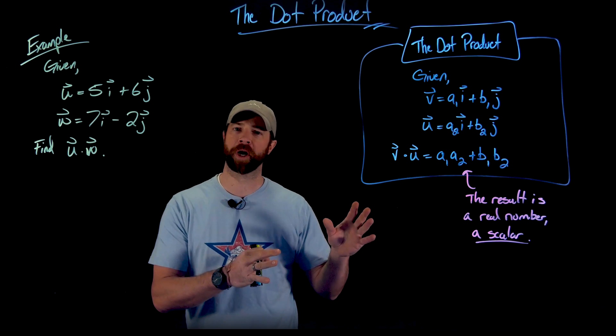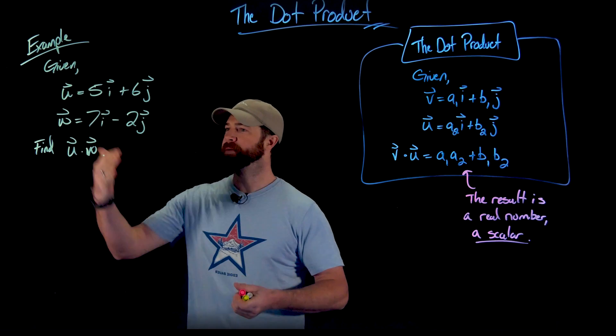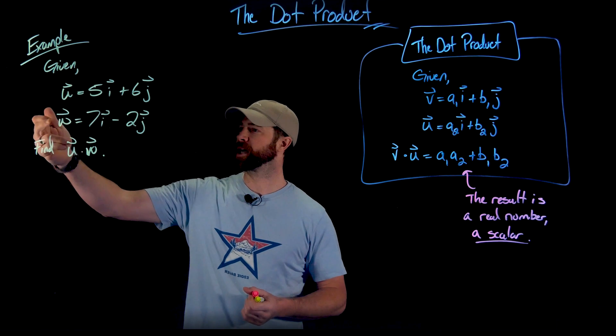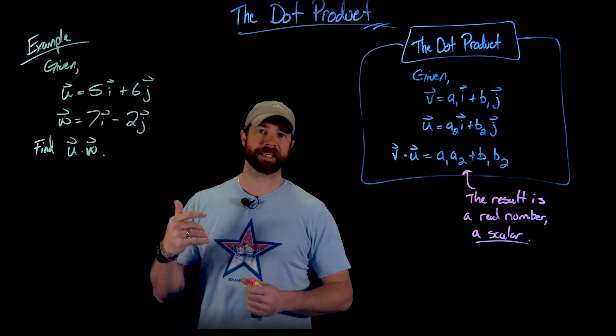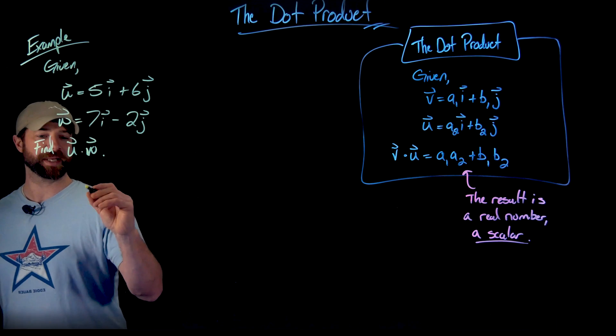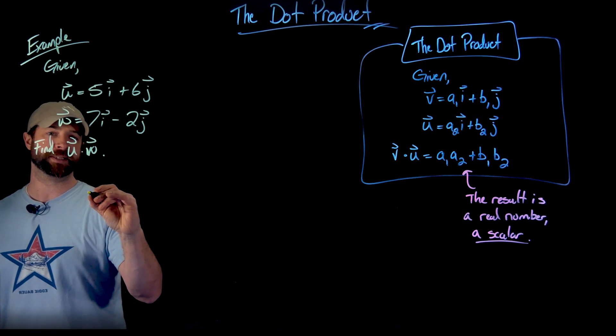Before I talk a little bit more about other properties of the dot product, let's just do a quick example to ground ourselves. If we have two vectors here, the u vector is 5i plus 6j, the w vector is 7i minus 2j. If we're being asked to find the dot product between these two, all we're going to do is multiply these components together in their appropriate places.